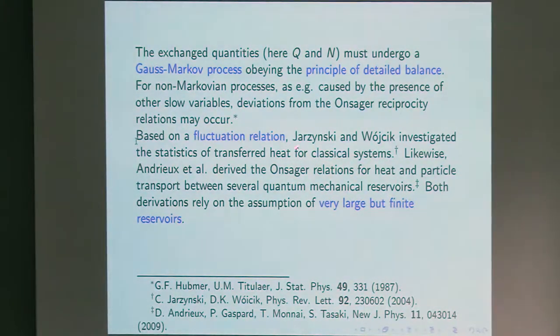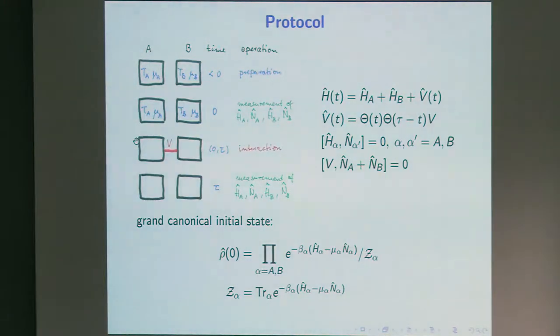So, about 10, 15 years ago, Jarzynski and Vujicic investigated for a classical system the transport of heat based on a fluctuation relation, and similar, Andrieu and Gaspar and Monay and Tasaki did this for quantum mechanical systems, and what they assumed is that one starts with finite baths which, on the other hand, have to be large. So, they must be both finite, but large. And what I want to do here is to consider baths which are finite in size and not necessarily large.